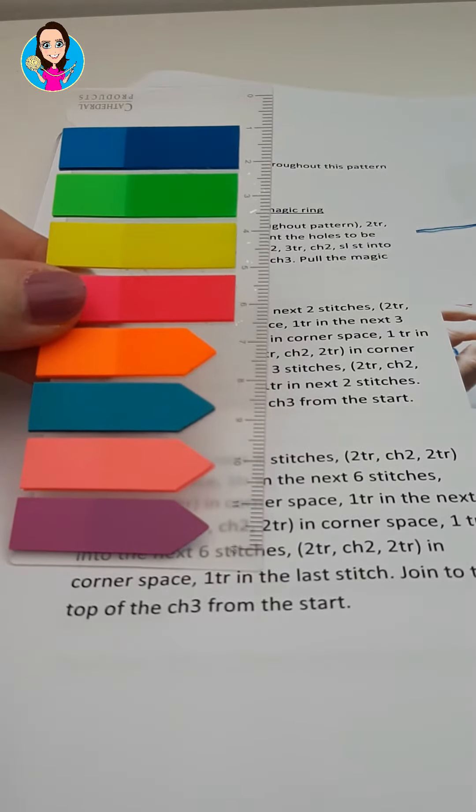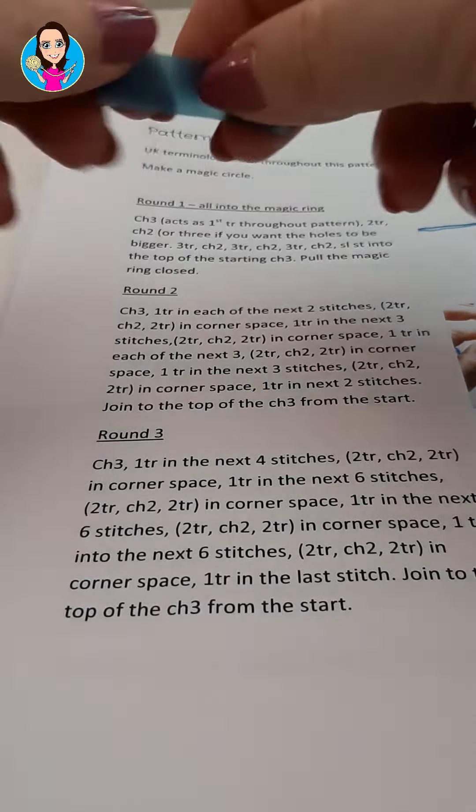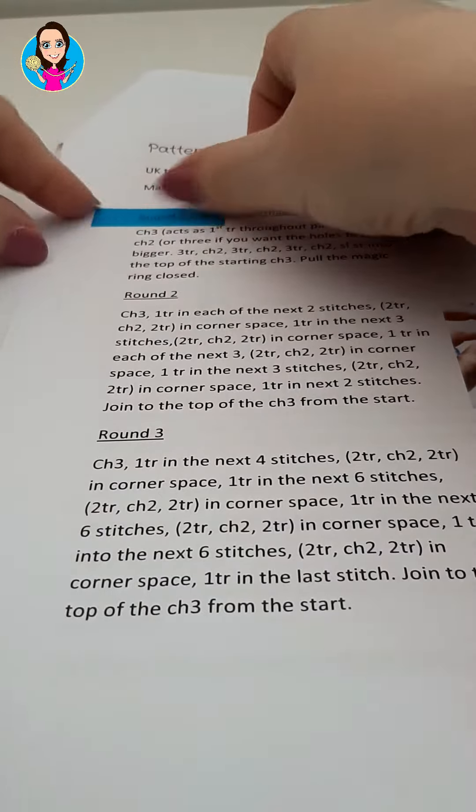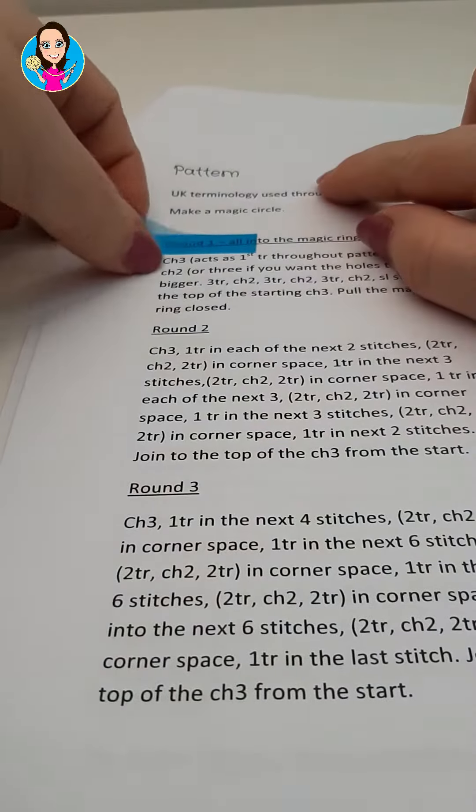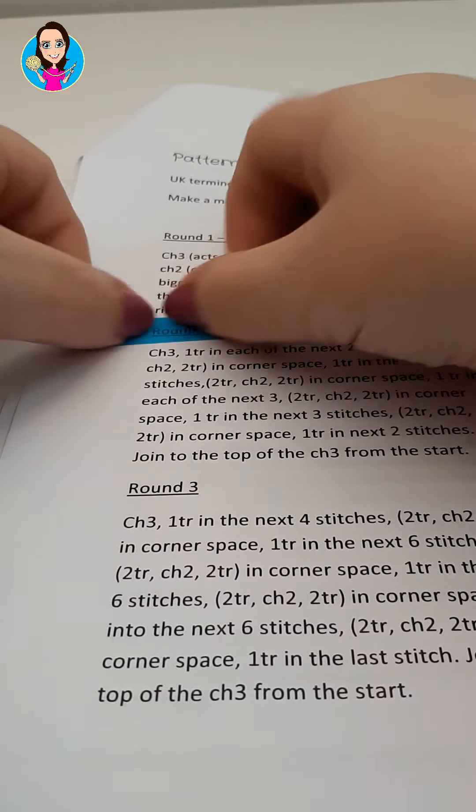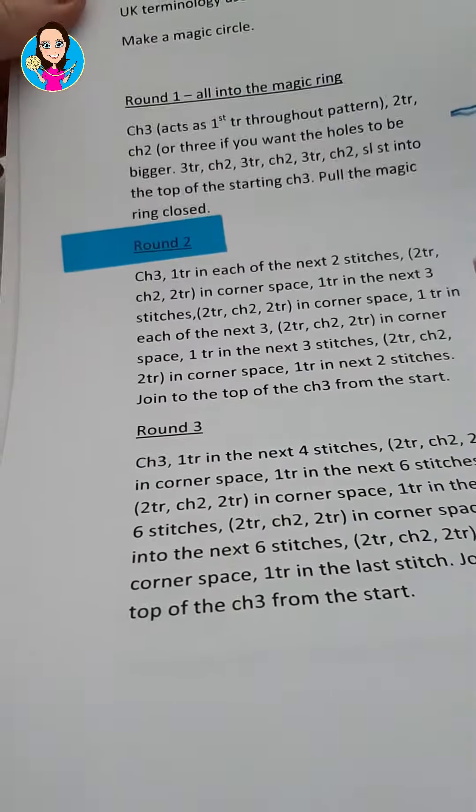These little post-it notes are brilliant for using with your patterns. Just need to take one off and you can stick them on wherever you are in your pattern so you know which row or which round you're working on, and then when you're on the next one you just need to move it down.